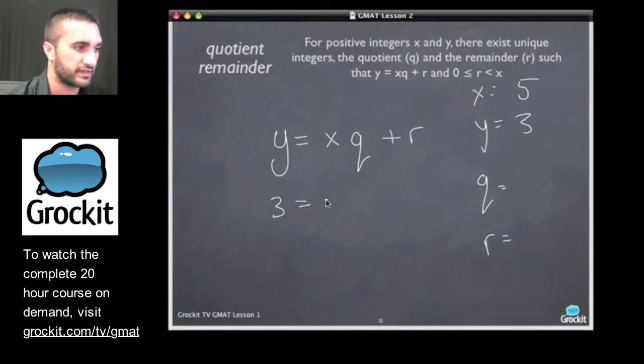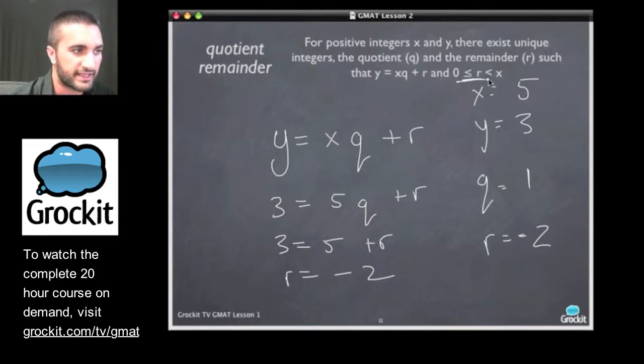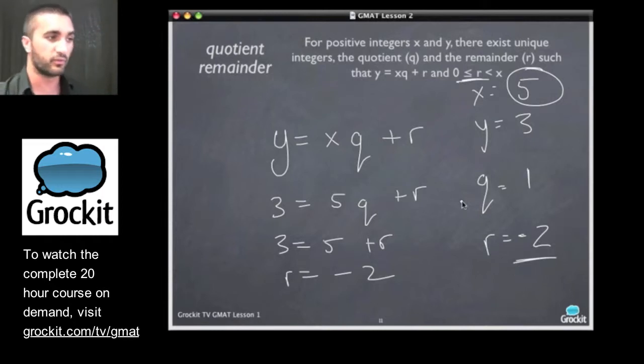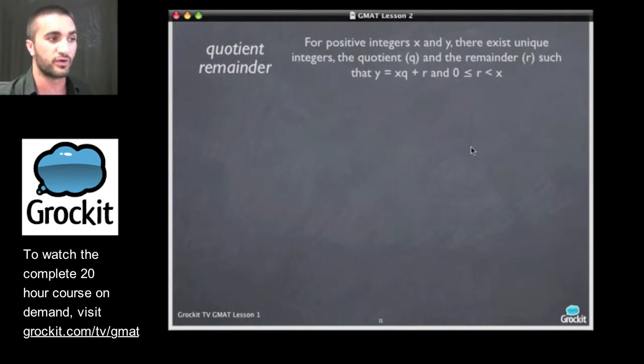Let's take a look here. So if we put in 3 and 5, if q was 1, we'd get 3 equals 5 plus r, and we'd get r equals what? Negative 2. So does this make sense? It's said that the remainder has to be greater than or equal to 0, but less than x. Well, x is 5, and negative 2 is less than 5.